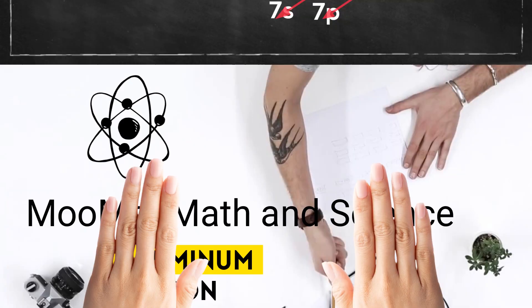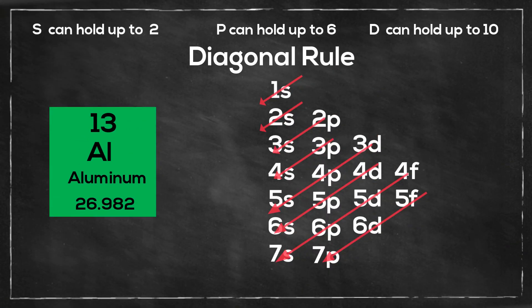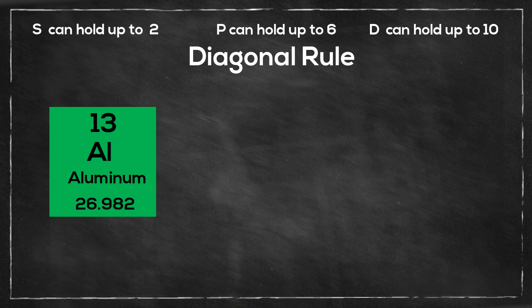I'll be using the diagonal rule method and although this works for most elements on the periodic table, there are some exceptions and I will leave a list of these exceptions at the end of the video. So let's get started.